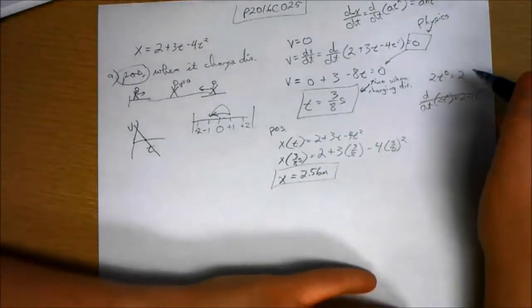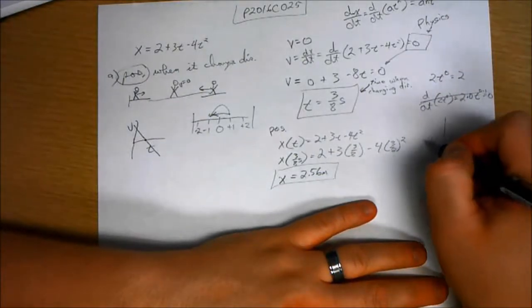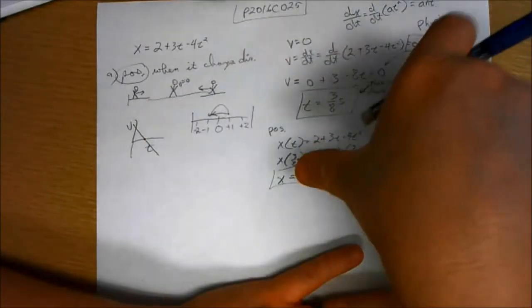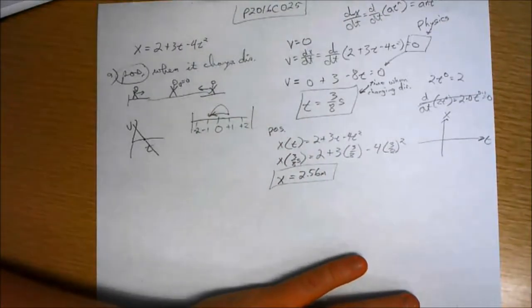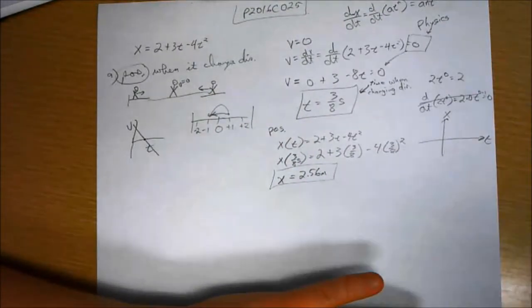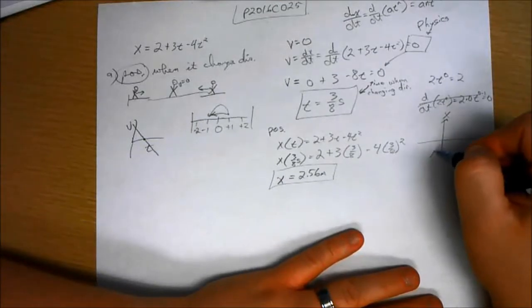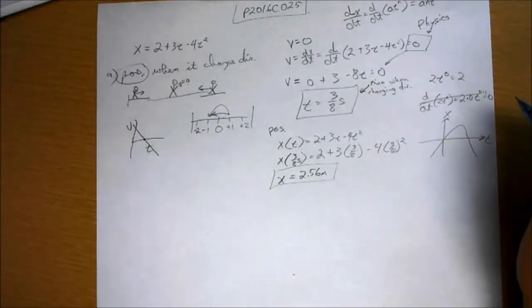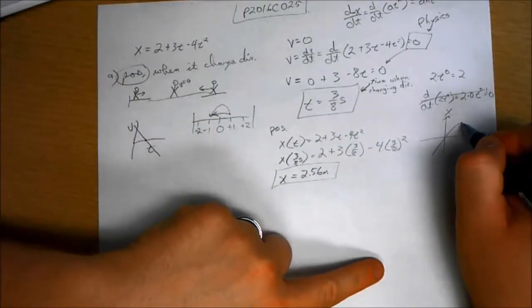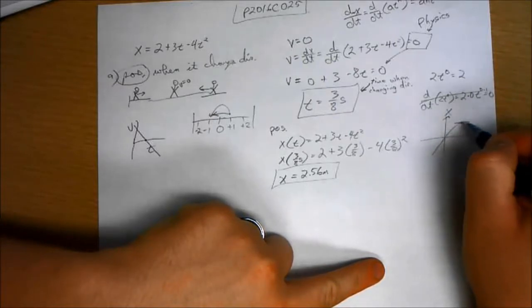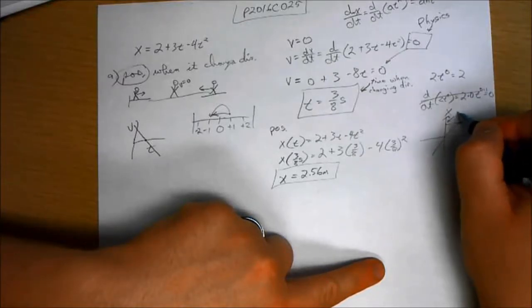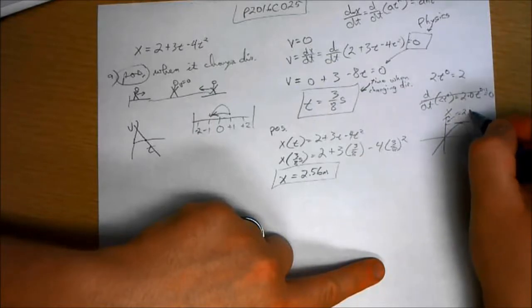If I were to think about this graphically, the x and t, we know this is a parabola. We know it's open downward because it has a negative coefficient on the second order term. I can throw it into a computer and see that it looks something like this. That means when it changes direction, its velocity must equal 0. So the slope must equal 0. That's going to be at the peak of the curve. And its position then is equal to x equals 2.56 meters.